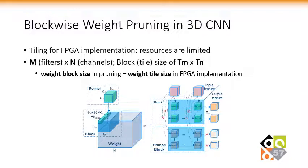Next, I will introduce our pruning technique for 3D CNNs. We adopt the loop tiling technique for the FPGA implementation because of limited resources for storage and computation. Our pruning method is able to adapt to tiling. Specifically, for a weight matrix of a convolutional layer, we define a weight block in pruning the same as a weight tile in FPGA design.